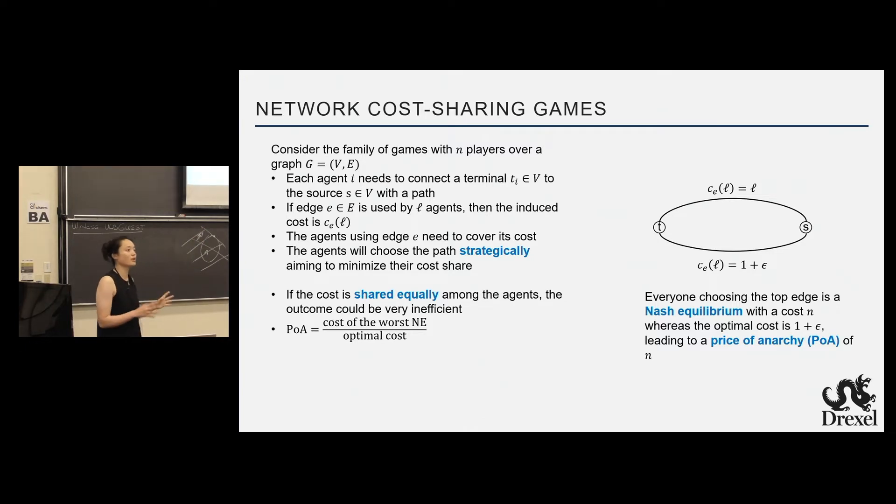So equal sharing will not work. We need to be more smart. We need to consider the graph, consider the cost function and consider where the agent is at. So more elaborate cost sharing mechanisms are needed.